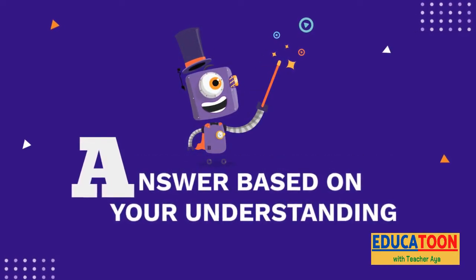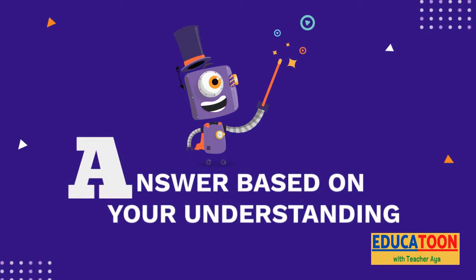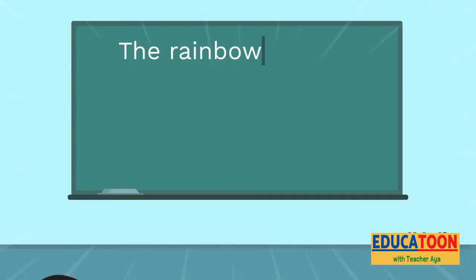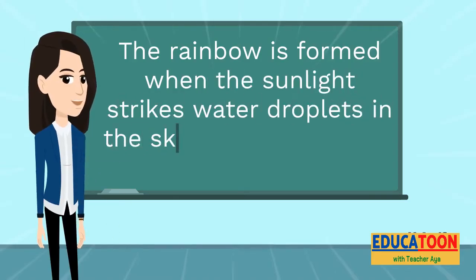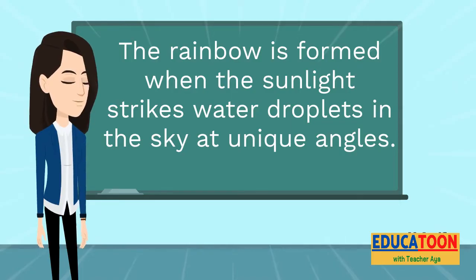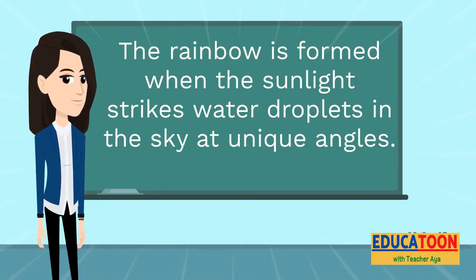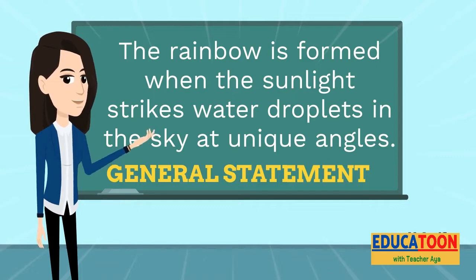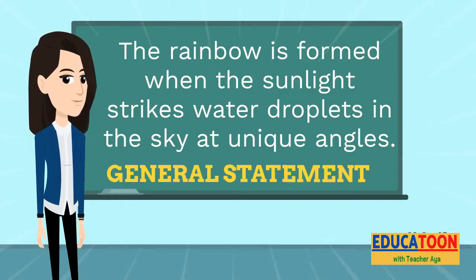After understanding the passage and the question, A stands for Answer based on your understanding. Using your understanding about the text, we will answer the question by ourselves. Based on our understanding, the rainbow is formed when sunlight strikes water droplets in the sky at unique angles. This answer is considered a general statement. Though we can provide an answer, we are not done yet — we have to prove that our answer is correct.